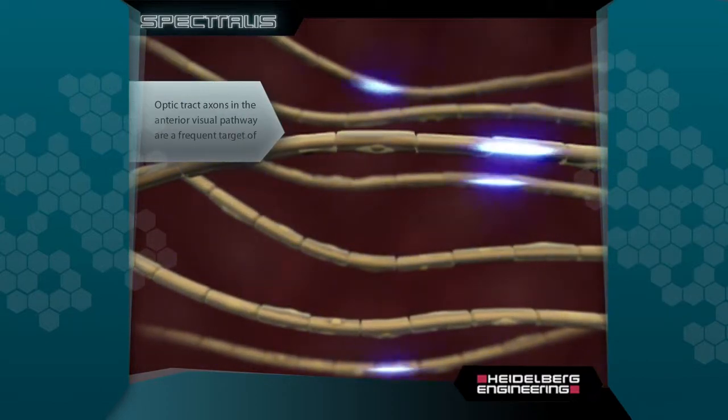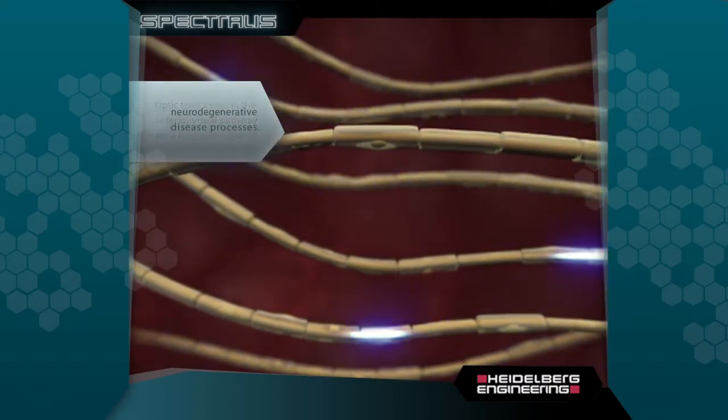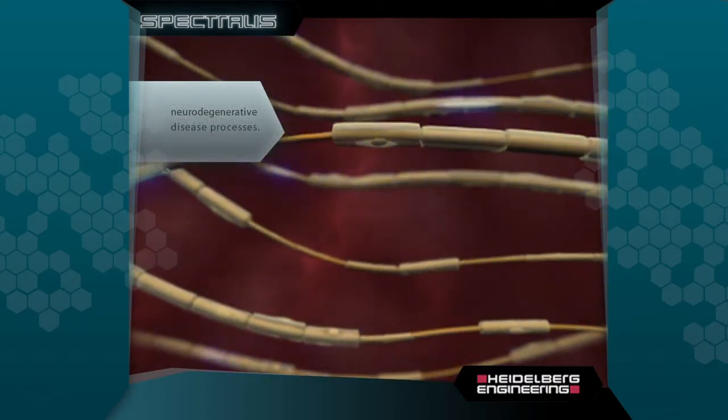Optic tract axons in the anterior visual pathway are a frequent target of neurodegenerative disease processes.